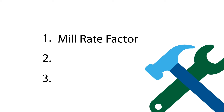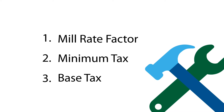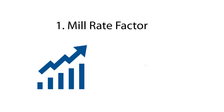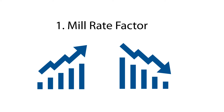The three tax tools are: mill rate factors, minimum tax, and base tax. The first tool, the mill rate factor, is used to adjust the mill rate by increasing or lowering the actual tax levy for a specific property class.